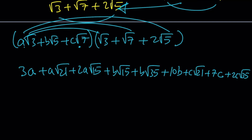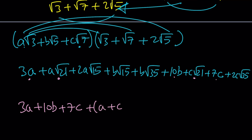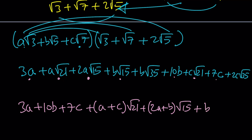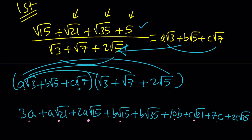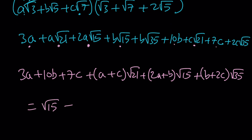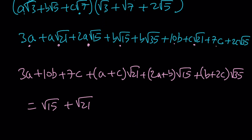Let's put the like terms together. Writing the integers first: 3a plus 10b plus 7c. Then putting the root 21 terms together: a plus c is the coefficient of root 21. Notice those are rational numbers. Root 15 has coefficient 2a plus b. And the only thing we have left is b plus 2c, all multiplied by root 35. Now we need to set it equal to the numerator: root 15 plus root 21 plus root 35 plus 5.